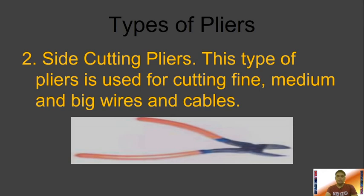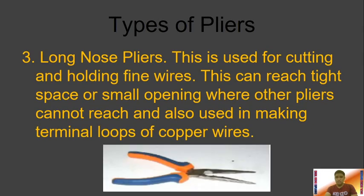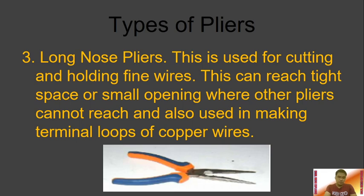Next we have side cutting pliers. This type is used for cutting fine, medium, and big wires and cables. Then we have long nose pliers, used for cutting and holding fine wires. They can reach tight spaces or small openings where other pliers cannot reach, and are also used in making terminal loops of copper wires.